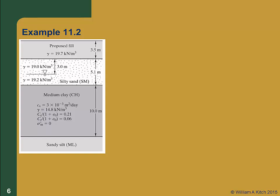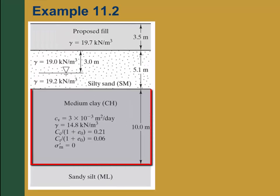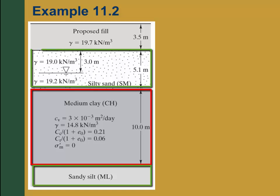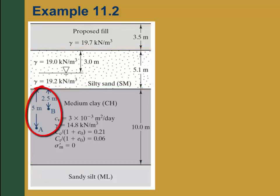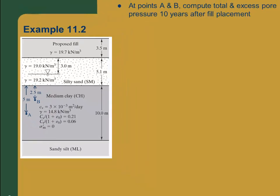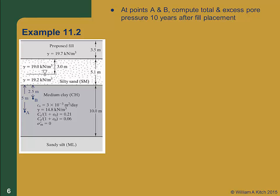Let's solve part of example 11.2 from your text as an illustration. We have a compressible layer 10 meters thick, sandwiched between a sandy silt and a silty sand layer. We propose to construct a 3.5 meter thick fill on top of the sand layer, and we'll compute the total and excess pore pressures at points A and B in the clay layer at a time 10 years after the fill has been placed. Since both the sandy silt below the clay and the silty sand above it have hydraulic conductivities much greater than the clay, it is safe to assume the clay is doubly drained, so the maximum drainage distance h_dr is half the layer thickness, or 5 meters. The change in vertical effective stress delta sigma z equals the unit weight of the fill times the height of the fill: 19.7 kN/m³ times 3.5 m, which is 68.9 kPa.